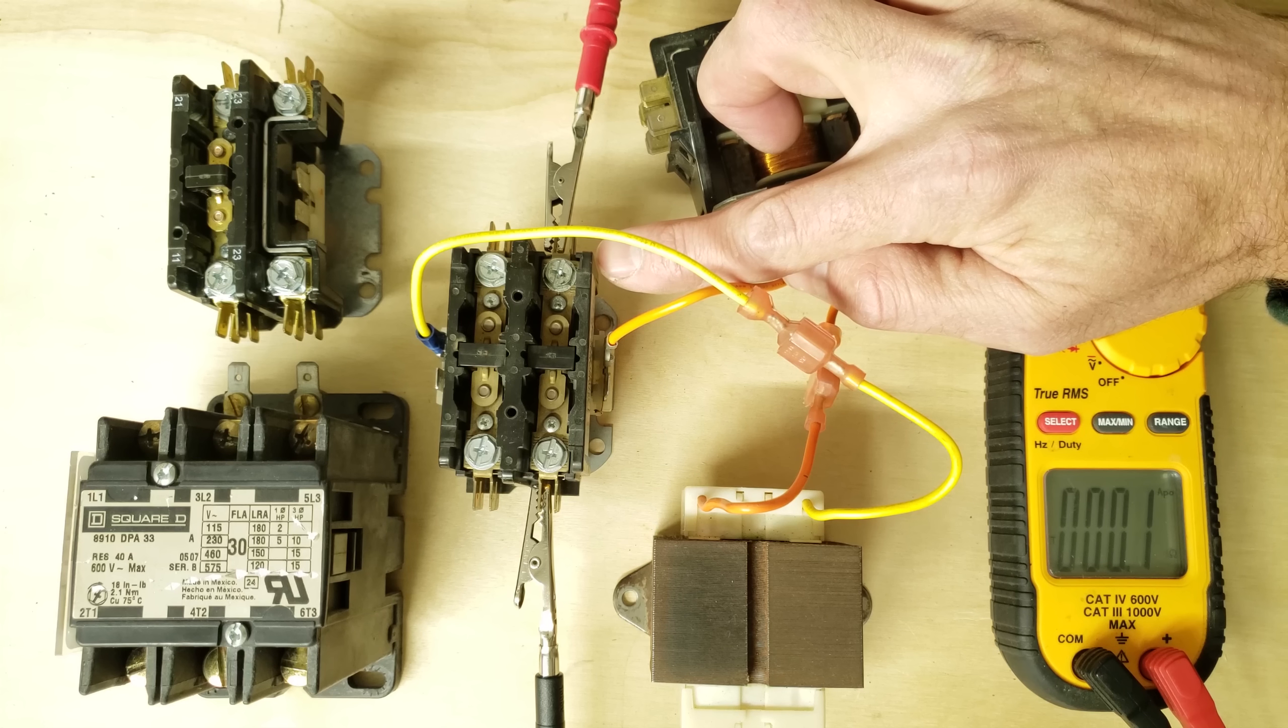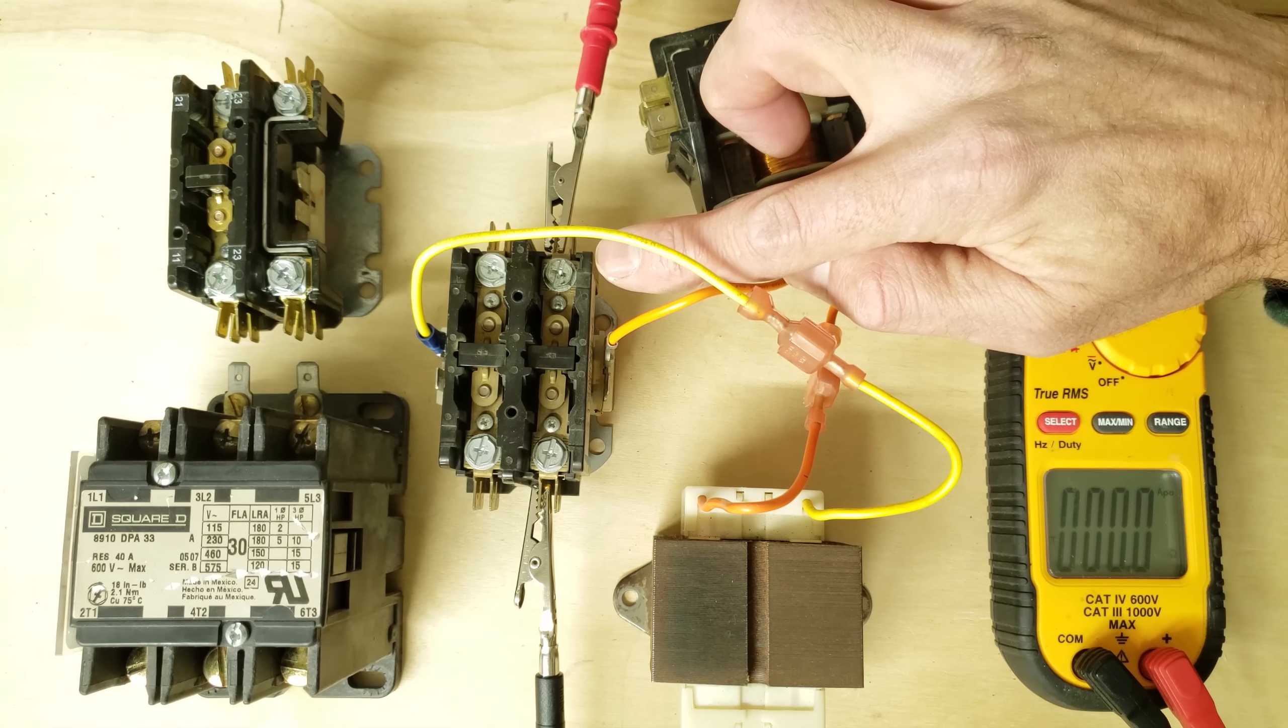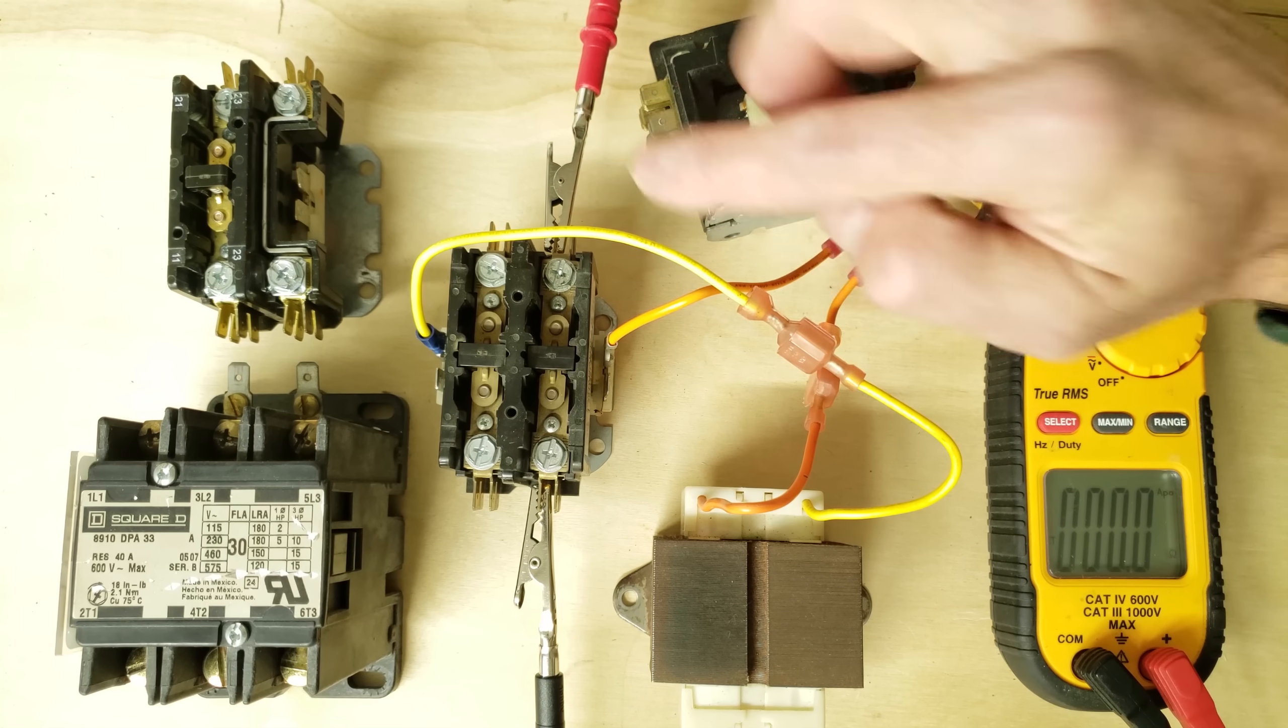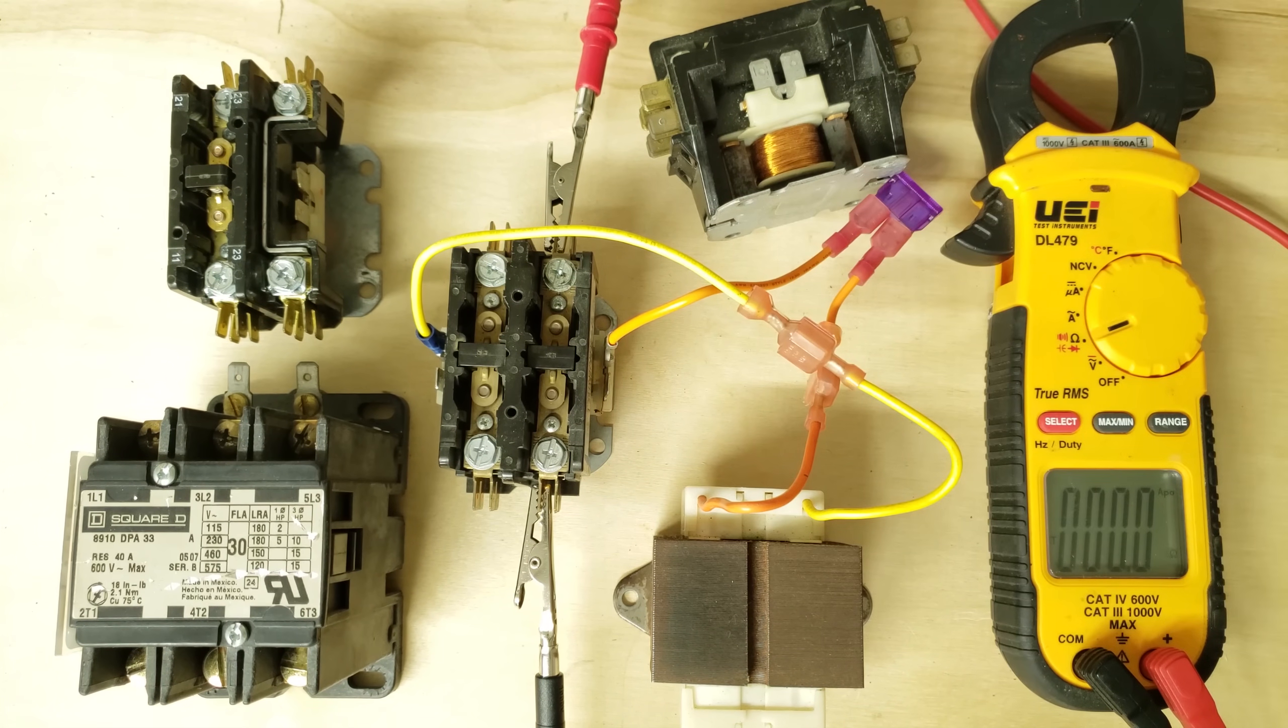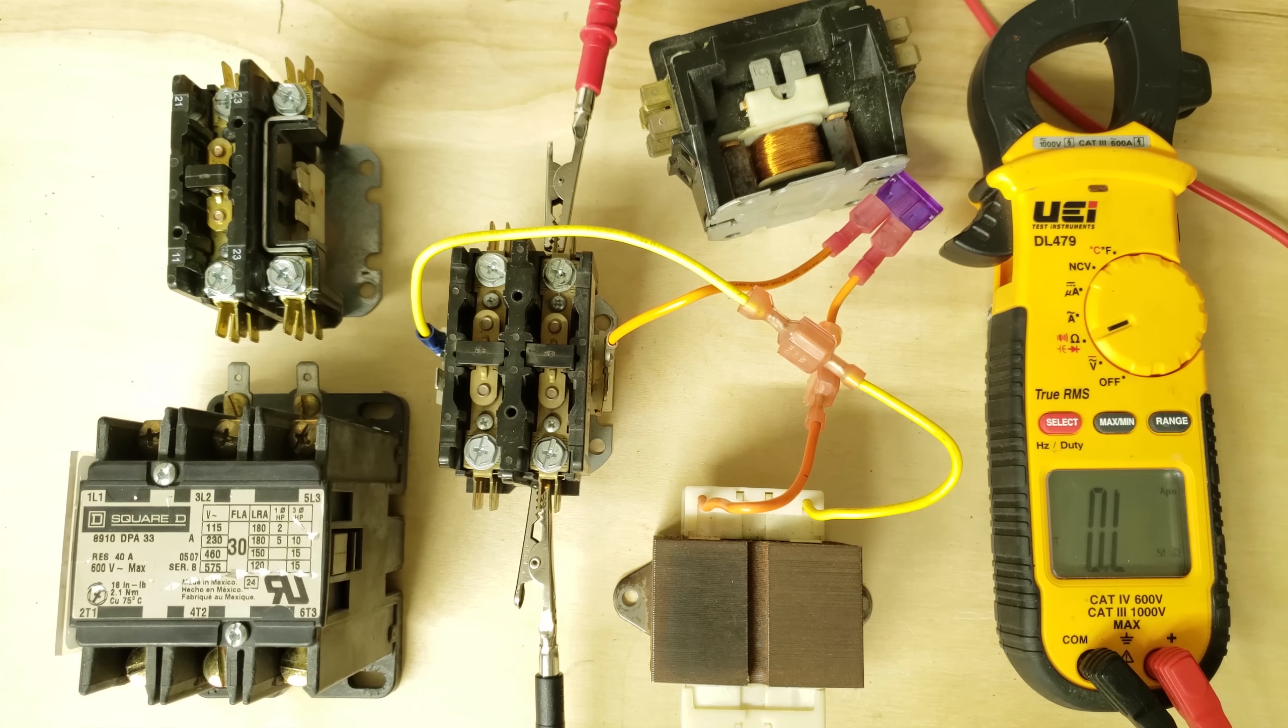Now we have 24 volts powering the coil which is an electrical magnet sucking down the contacts. We have our one probe here and our other probe here and we're reading on our multimeter 0.0 ohms of resistance. So that means the contacts are closed, they're connected. Now we'll disconnect our 24 volt power and we're reading OL which means open line. So now we're not connected. That's how the contactor works.